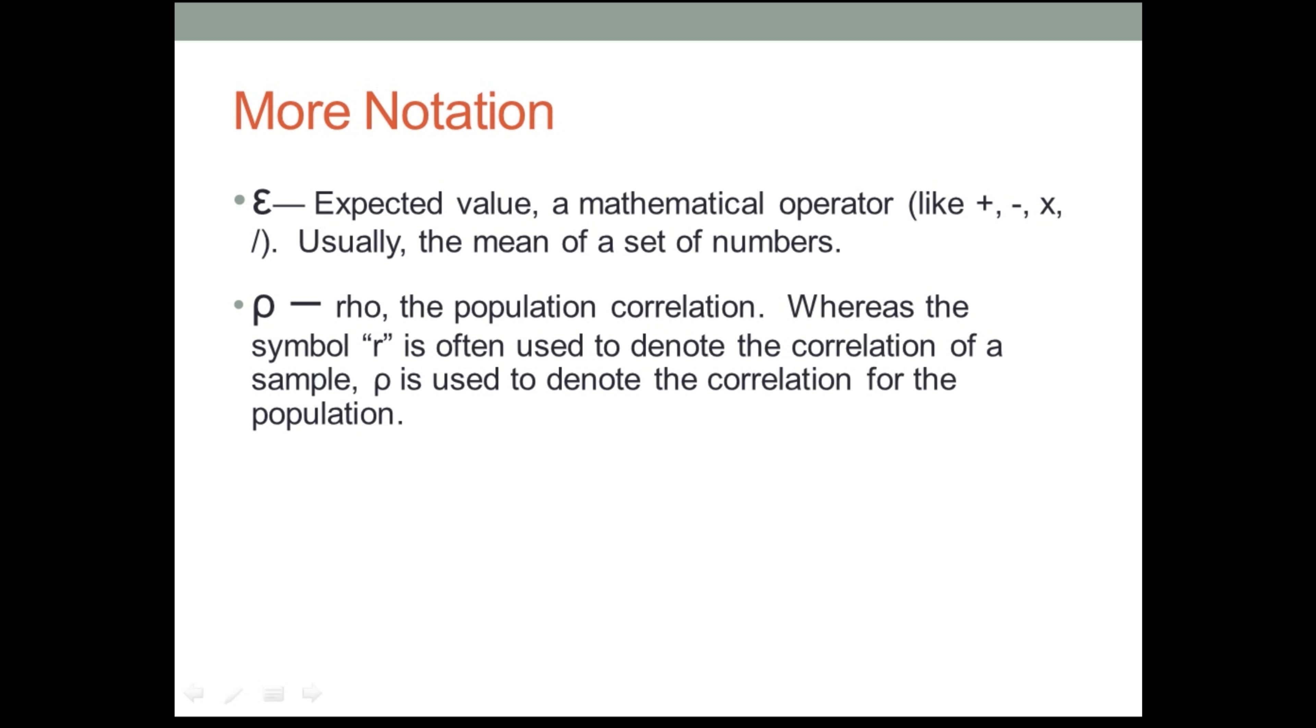In this instance, I talk about an expected value. What's the expected value of their height? It's also going to be the mean. But because it's in the future, I don't talk about the mean of the heights of these future students. I talk about their expected value. That's what that is. And then the last symbol is rho, which stands for the population correlation. Whereas we use R,